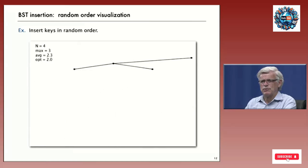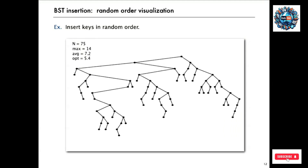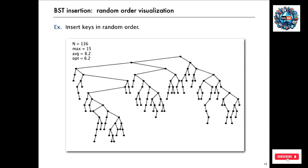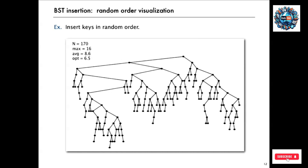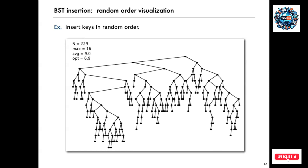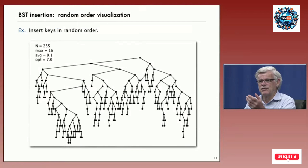Let's visualize what happens when keys come in in random order. The tree grows from the bottom, with slight side-to-side adjustments to accommodate new keys. Even for hundreds of keys, the path length from top to bottom stays small. In this case with 255 keys, the maximum distance from top to bottom is 16, the average is only 9, and in a perfectly balanced tree it would be 7. So the tree is well-balanced, meaning search and insert costs are only about 16 comparisons for 255 keys.